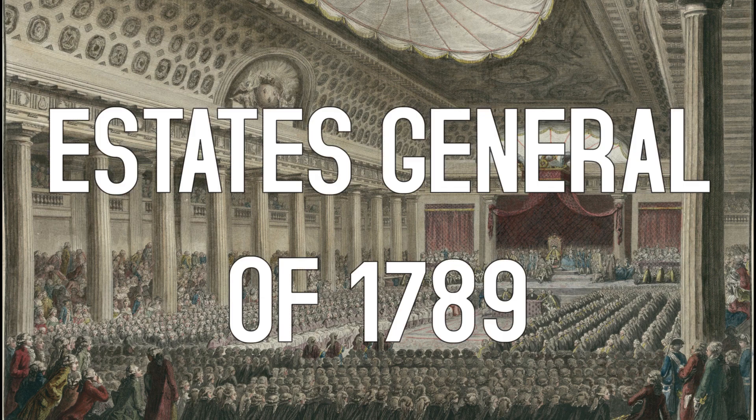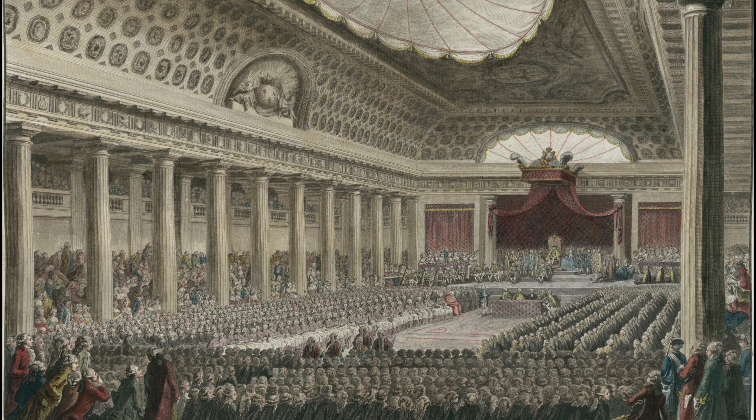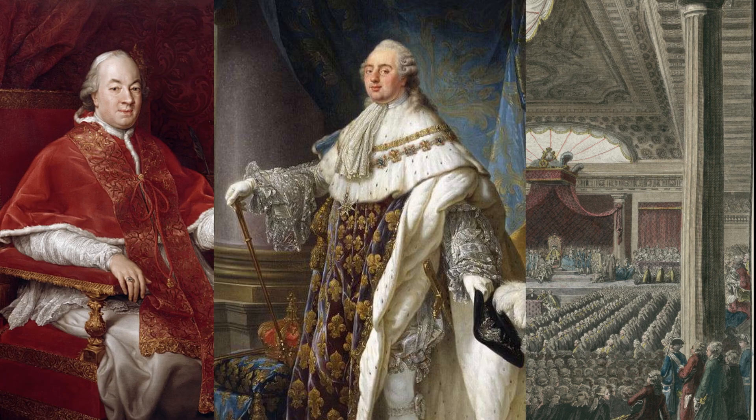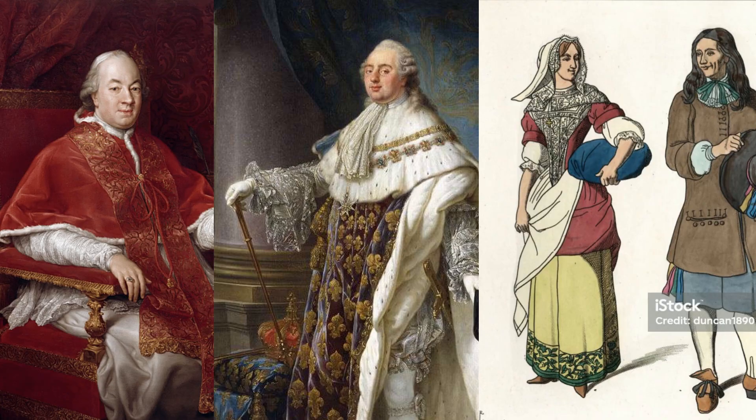The assembly, called the Estates General of 1789, convened in Versailles, and was made of the major three estates of the realm: the clergy, the nobility, and the commoners.